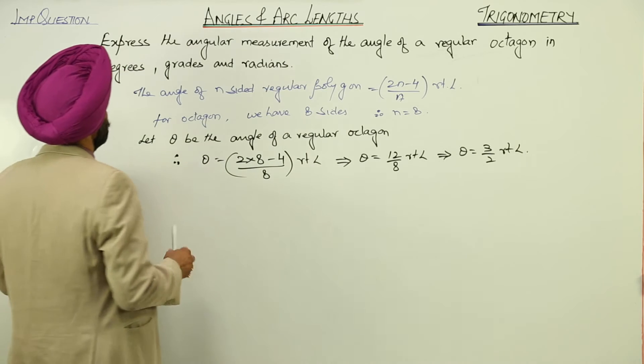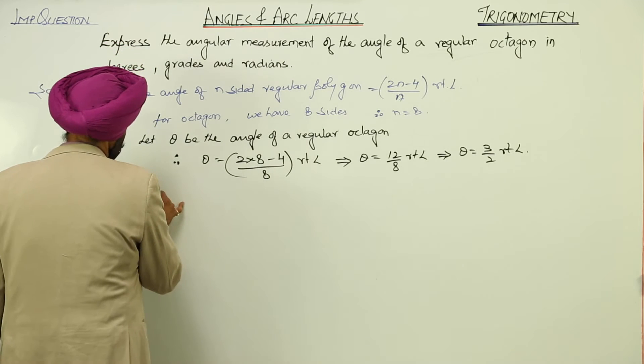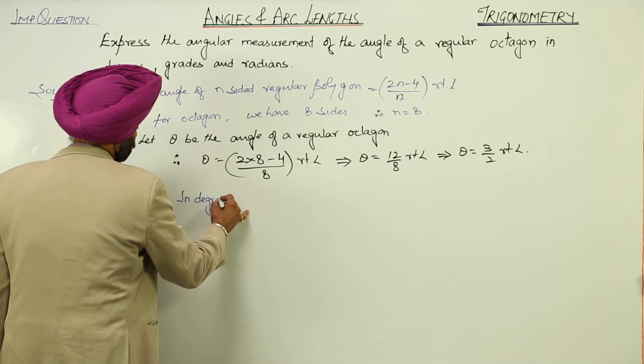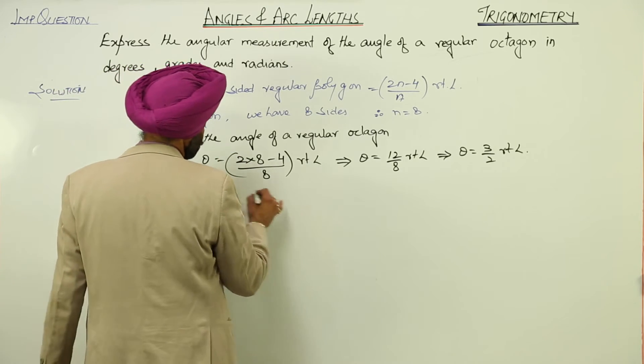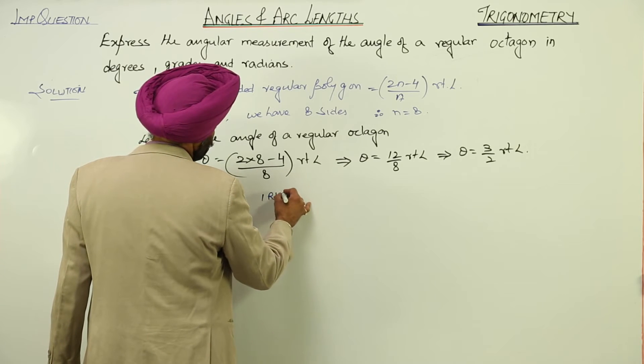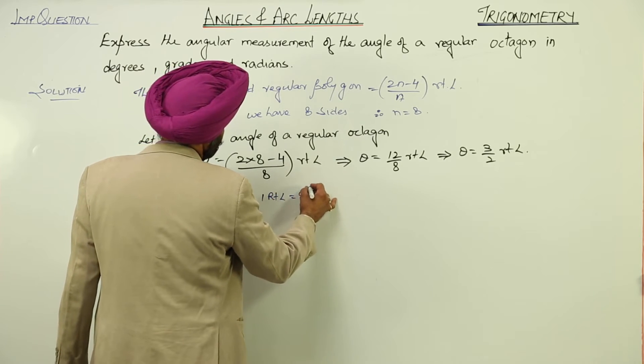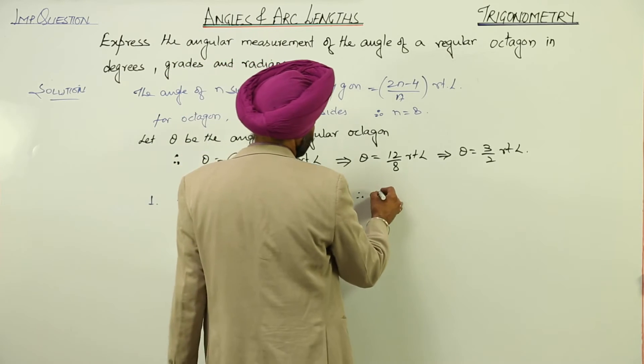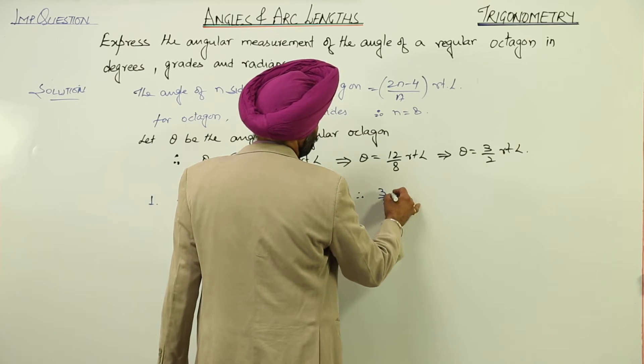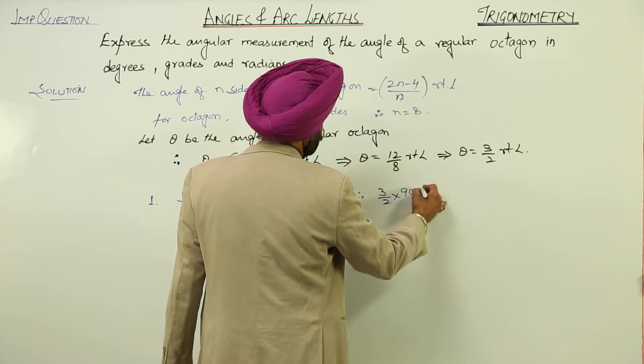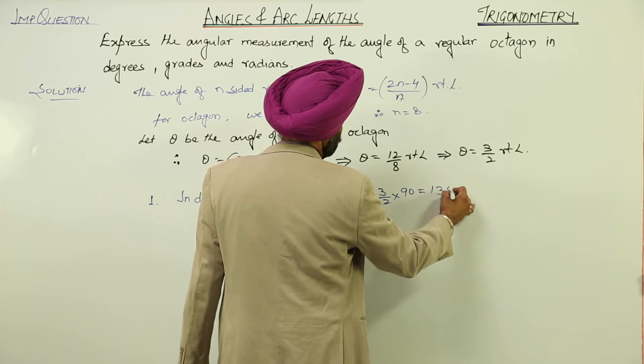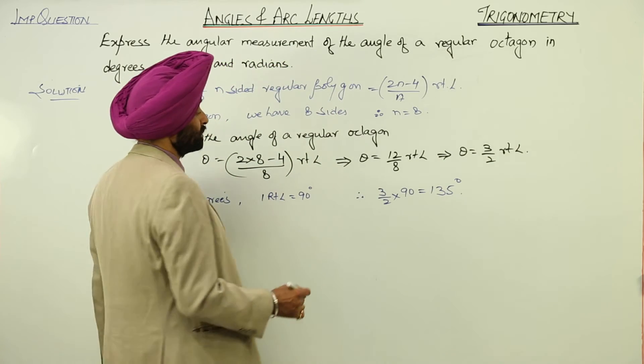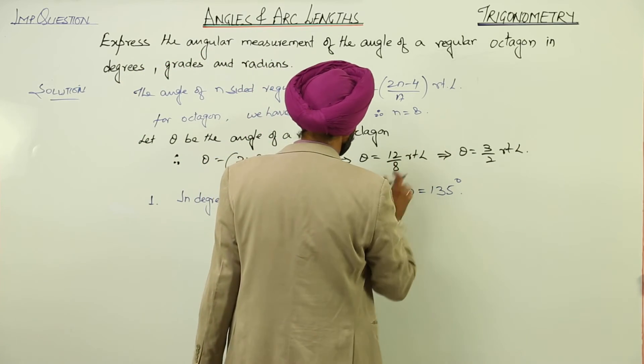Number 1 is in degrees. Now, 1 right angle is equal to 90 degrees. Therefore, 3 by 2 into 90 is equal to 135 degrees. So, in degrees, the angle is 135 degrees.